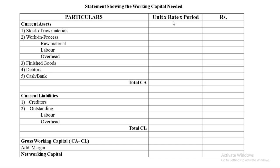Unit and rate come from the working notes; period is checked from the question. Key rules to remember: under WIP, labor and overheads are always taken at half value since the work is not yet complete. For finished goods, the rate is always cost of production. For debtors, the rate is always selling price. For creditors, the rate is always raw material rate.